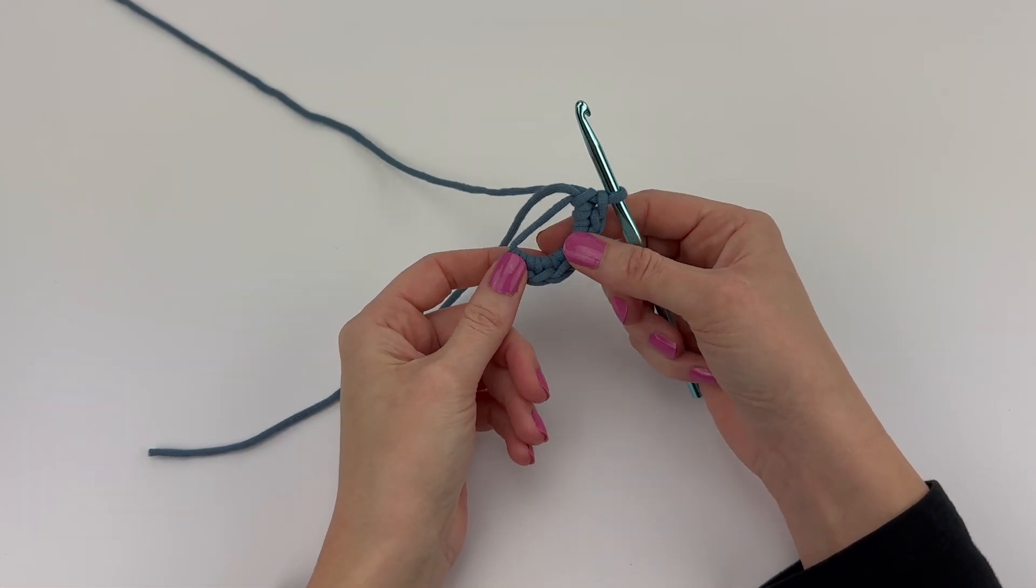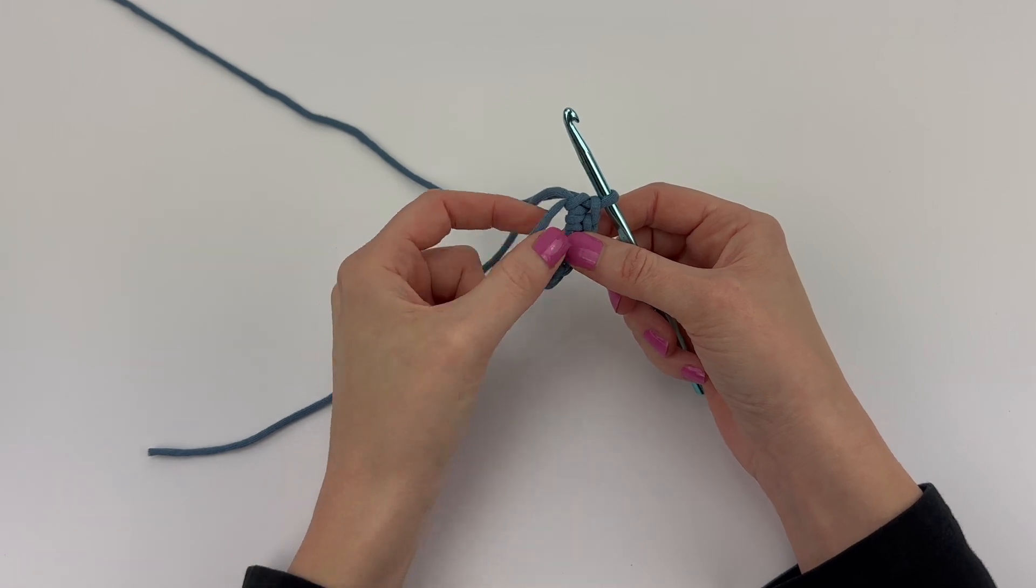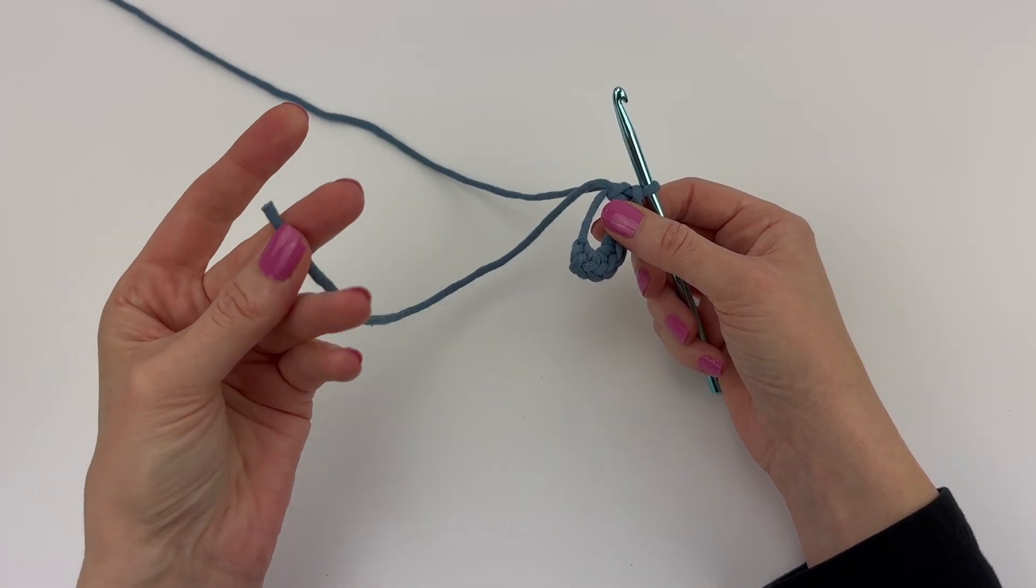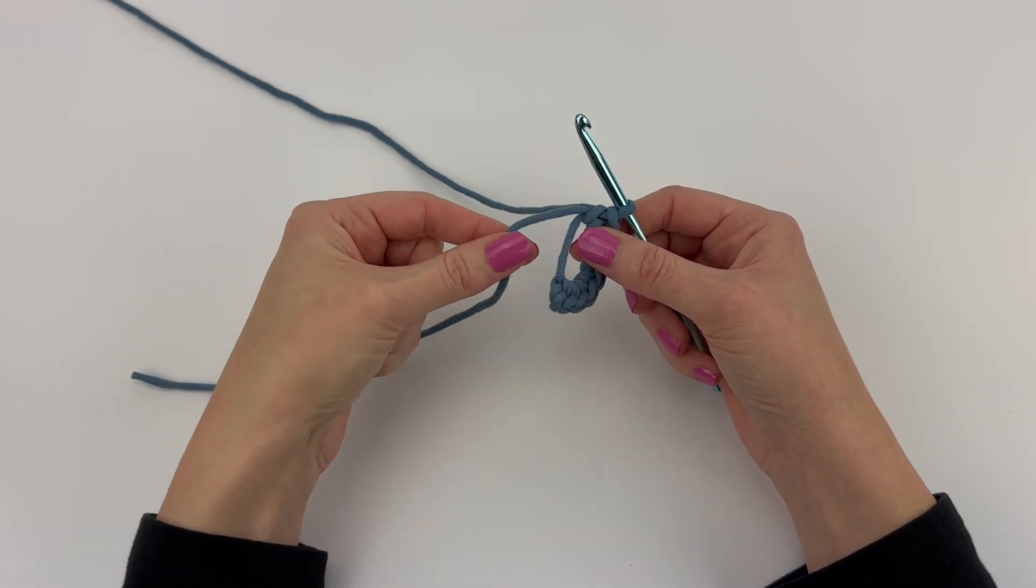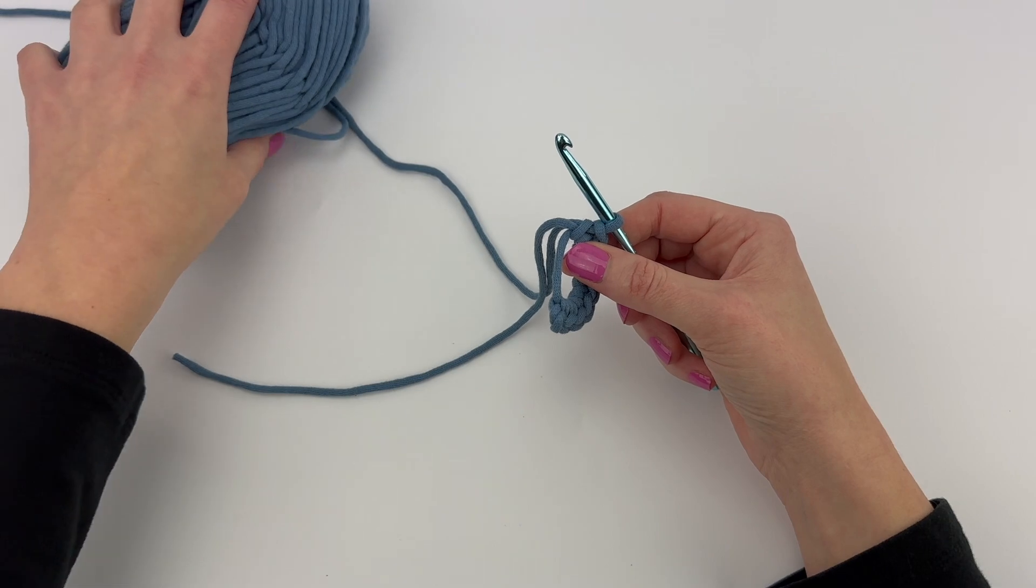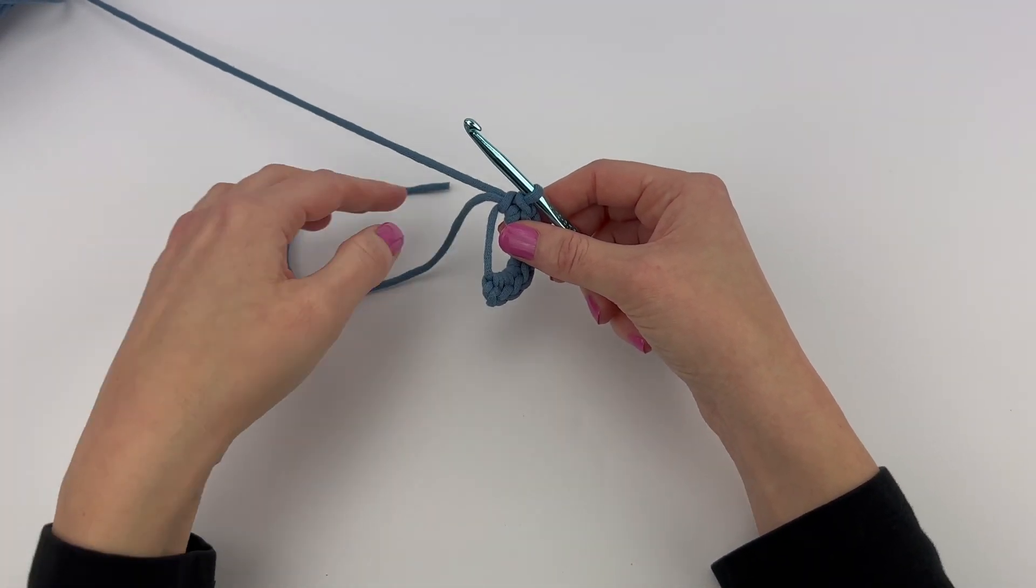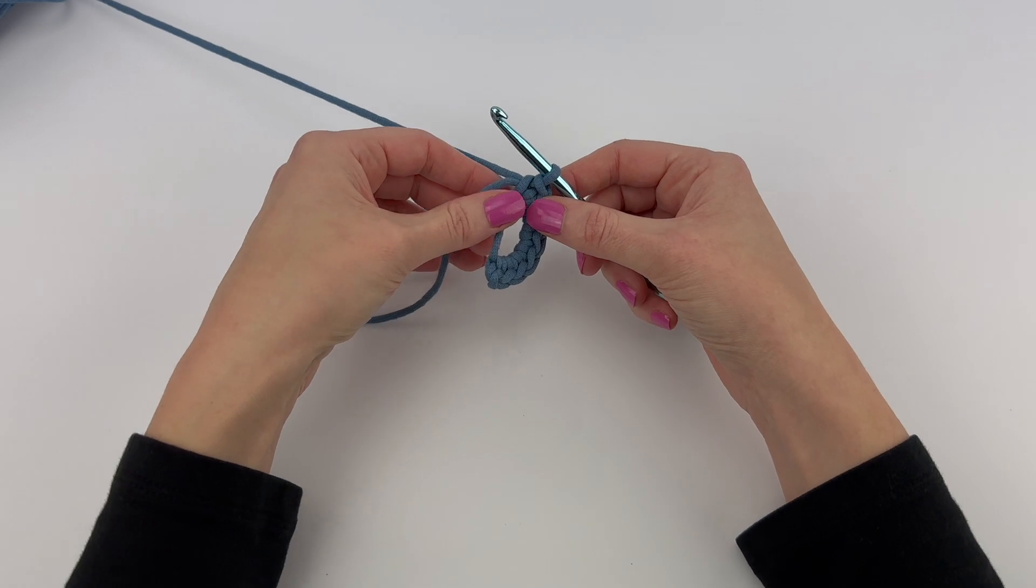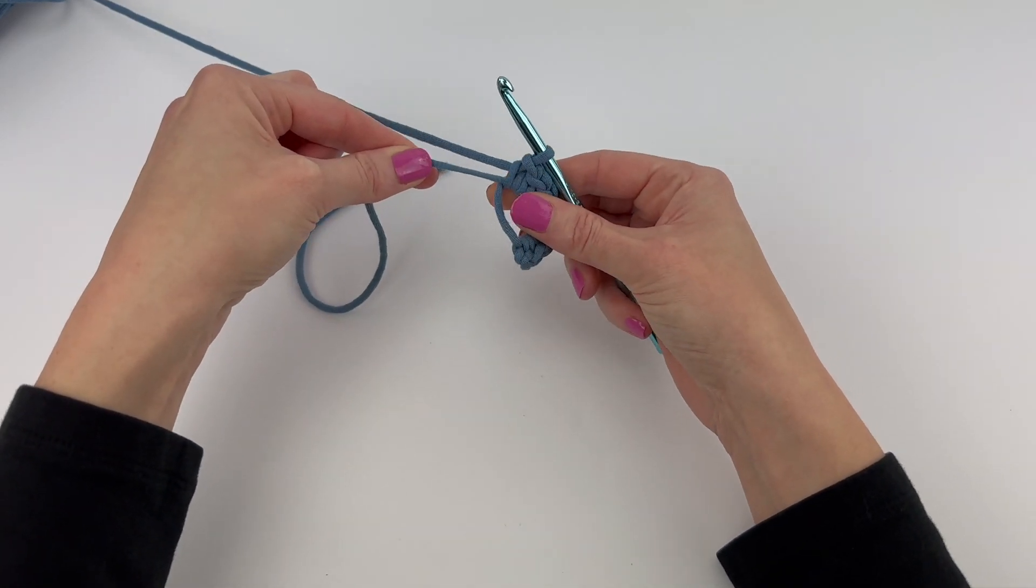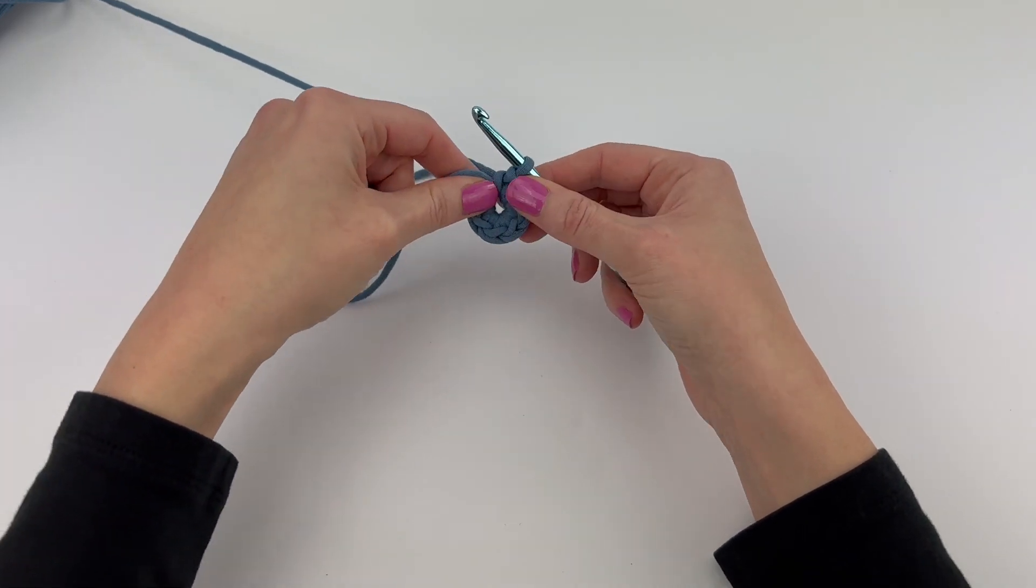Once you have your number of stitches that you need to make into the magic circle completed, you're going to use the tail and you're going to pull the tail, not the end that's attached to the skein of yarn. You're going to pull the tail to close the magic circle and you're going to pull it really tight. So you just pull on this tail and the magic circle will close.